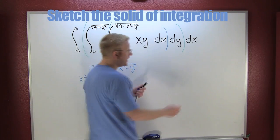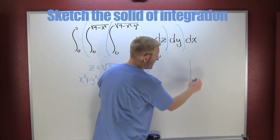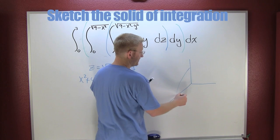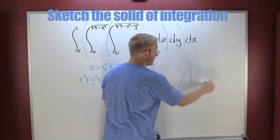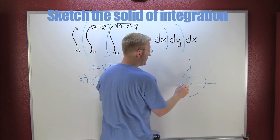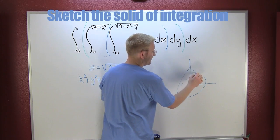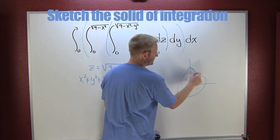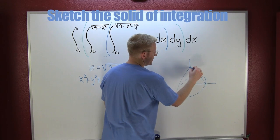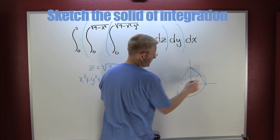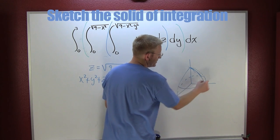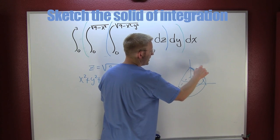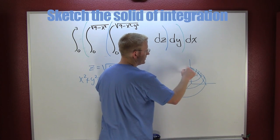So if I'm going to draw the top half of a sphere, it would look something like this. There we go — that's a nice sketch of the top half of a sphere.